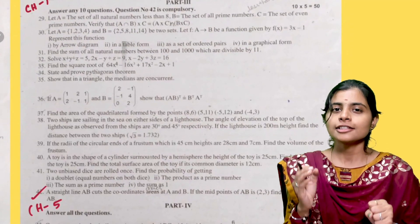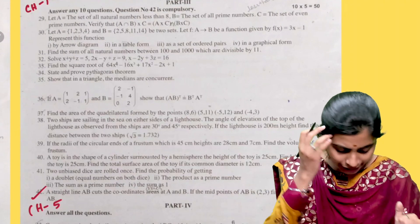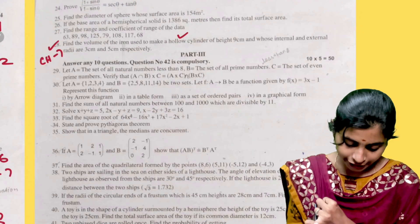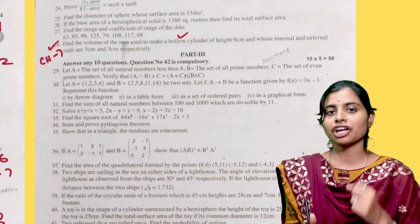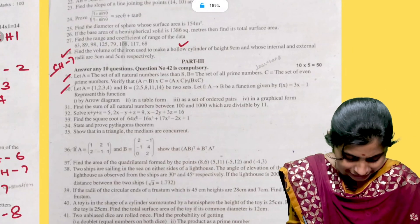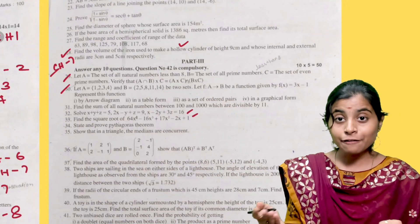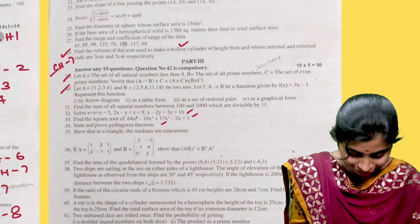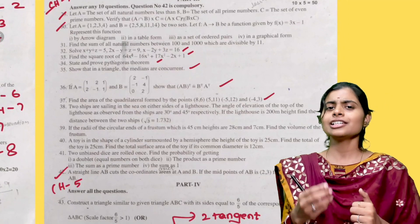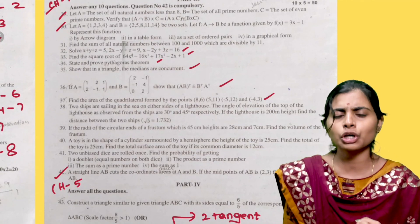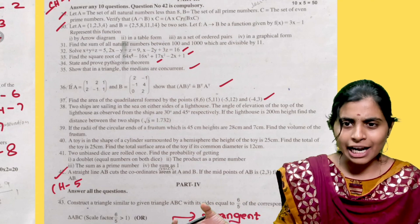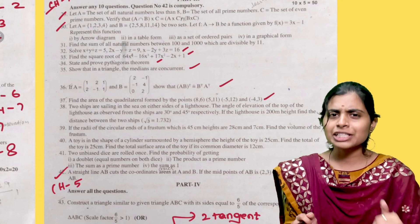So we will do Chapter 7 and Chapter 5. The intersection proof problem we will do. Then questions 29 and 30 — Chapter 1, 2 marks each. Chapter 1 — question 31 and 32 — because it is a perfect square root problem. Triangles, median, and the area of the quadrilateral — those are important topics we will discuss.